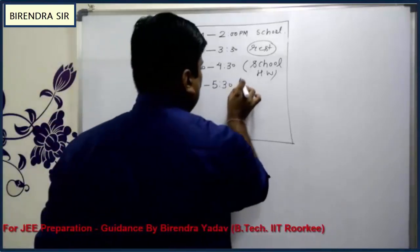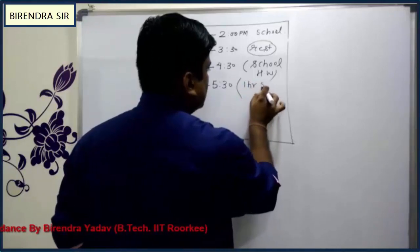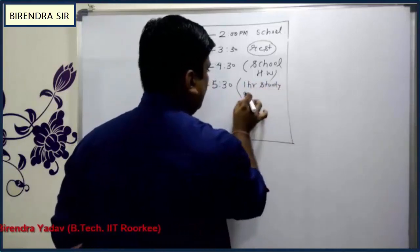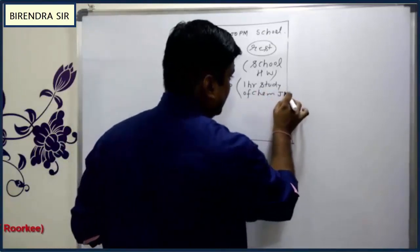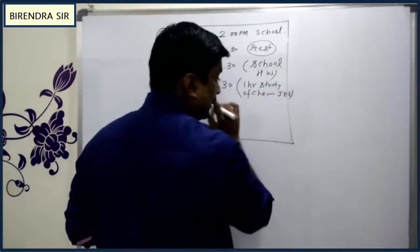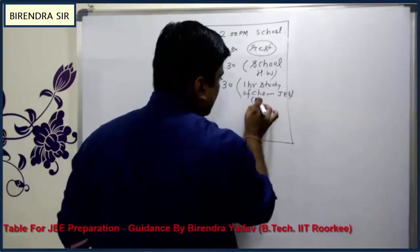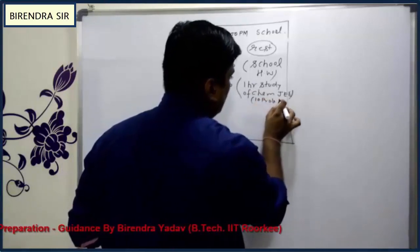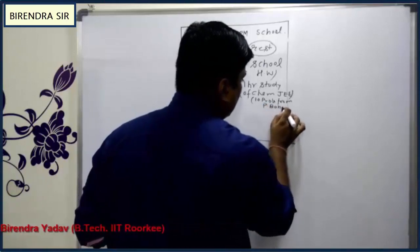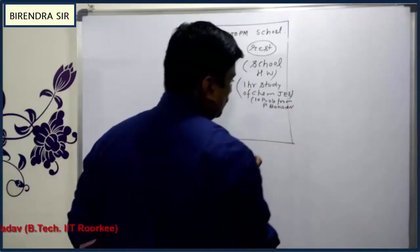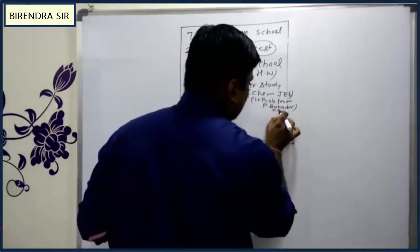From 4:30 to 5:30, write one hour of chemistry study for JEE. Also write specifically what you will do in that hour — for example, 10 problems from P. Bahadur Numerical Chemistry, chapter: chemical equilibrium.